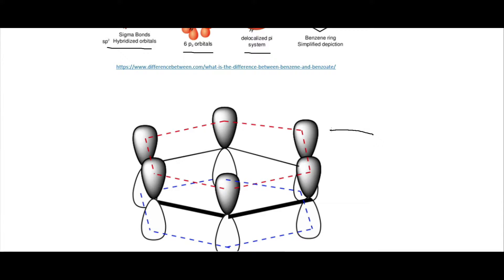And so it'll look something like this where the tops sort of have this same phase or the same sign and the bottom have the same sign. And so we get kind of these pi rings that are sort of above and below the plane of the ring.